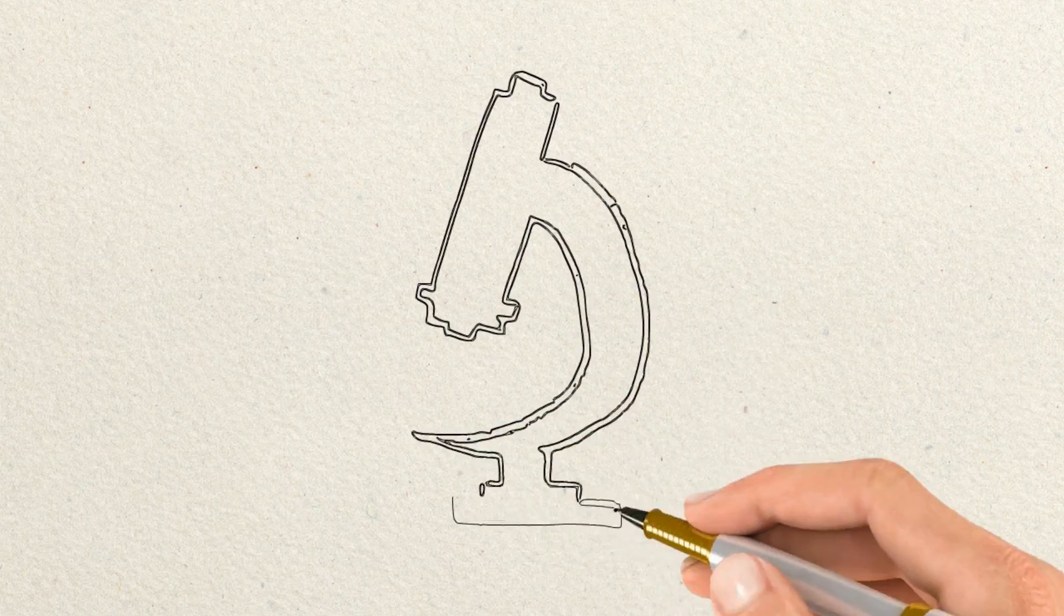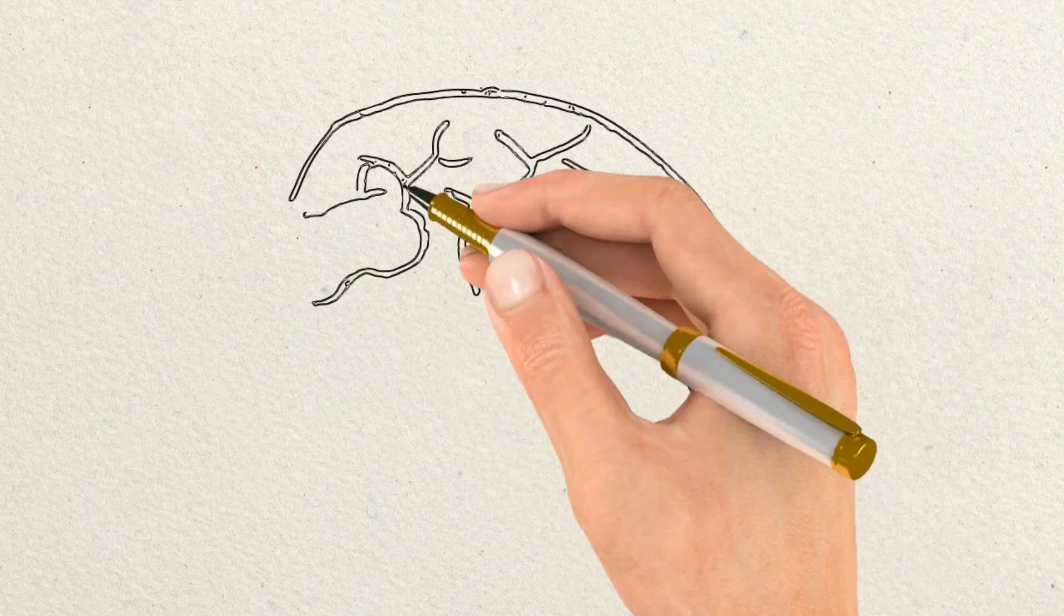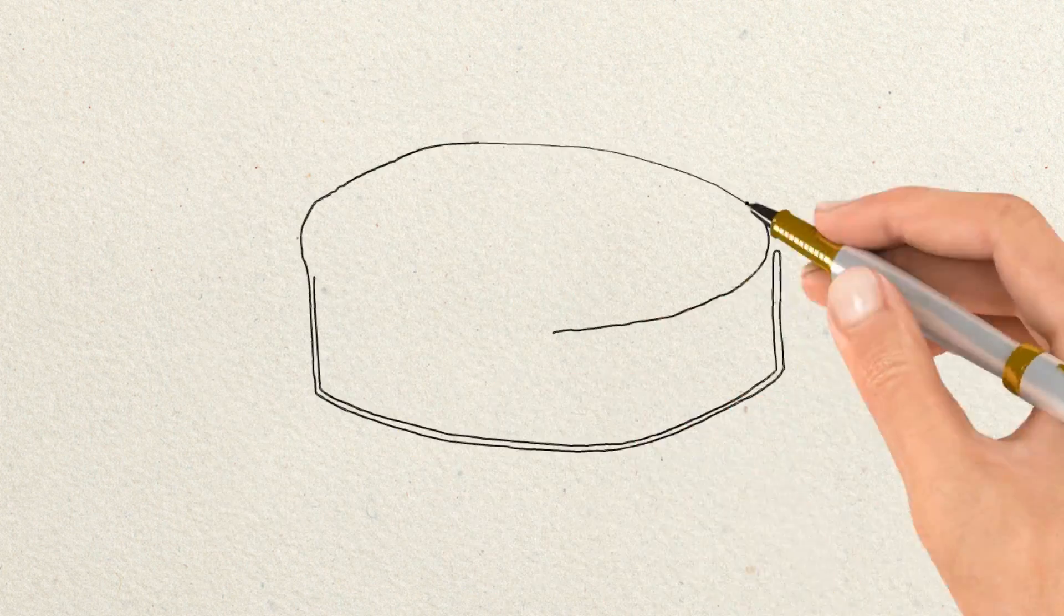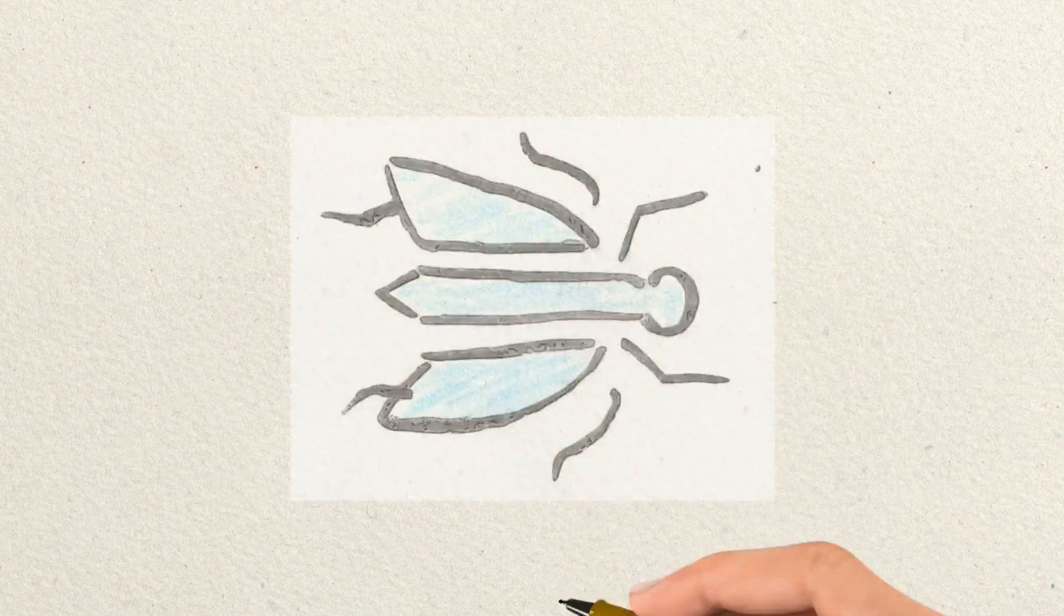You might imagine the job of a neuroscientist as using brain slices to do experiments most of the time. However, as neuroscience advances, more and more research is now focused on very small organisms rather than brain tissues from humans.